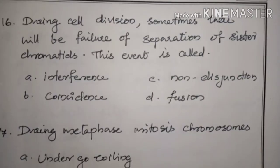During cell division, sometimes there will be failure of separation of sister chromatids. This event is called — Answer: Option C, non-disjunction.